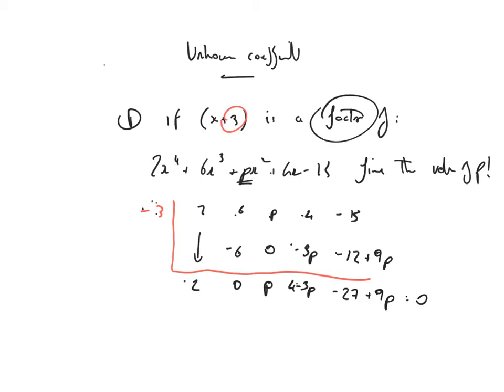Now how do I know it's equal to 0? Well, because the thing's a factor, okay. So minus 27 plus 9p is equal to 0. 9p then is equal to 27 and p is equal to 3. Okay, let's just summarize this one again.